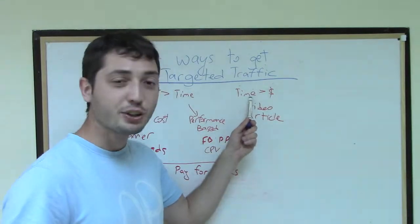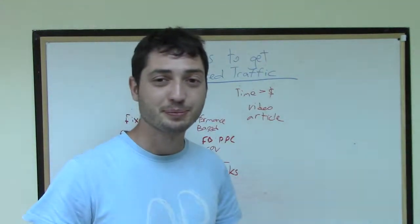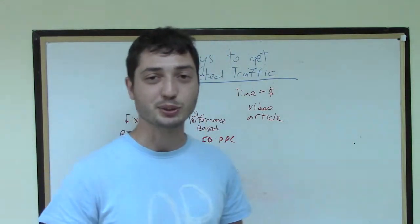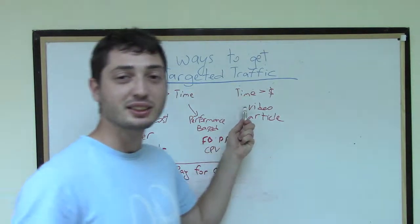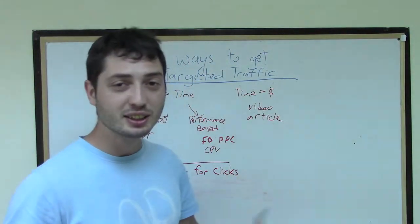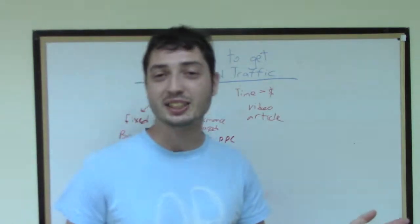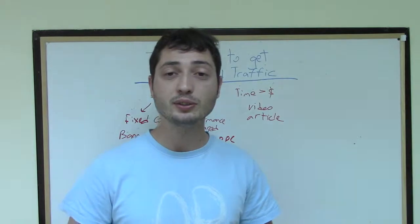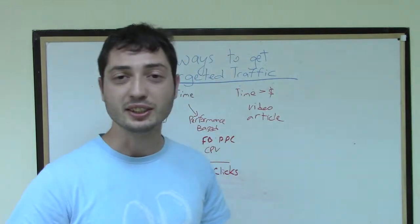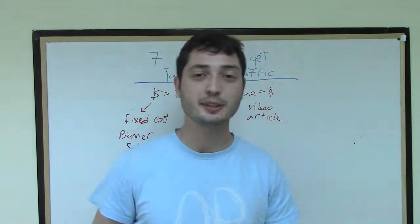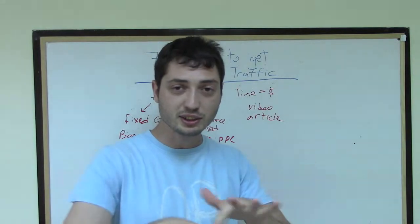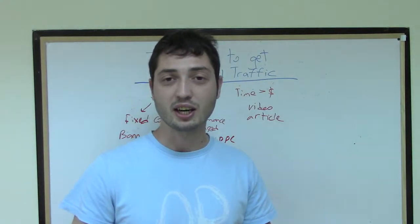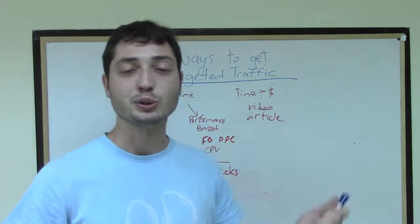Another category is when you have more time than money to exploit this traffic source. One of the two best examples is video marketing and article marketing. Video marketing is basically you create a video and then you distribute it into video sites like YouTube and when people like your video, they click on the link in the description area or in the annotation. Article marketing is when you write an article relevant to your niche and you send to an article directory and there is a link inside the article that people can click and go to your website.